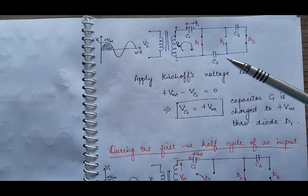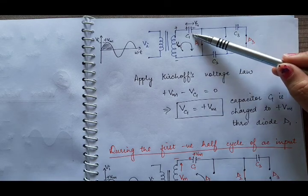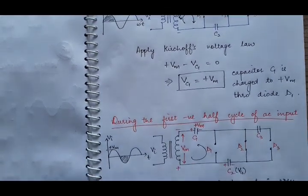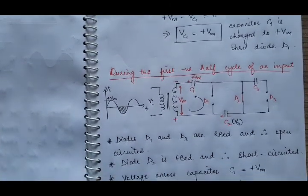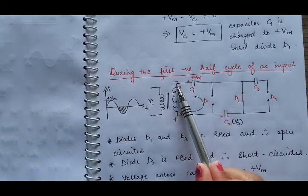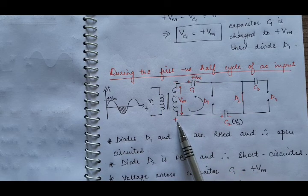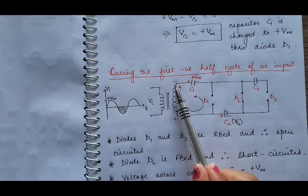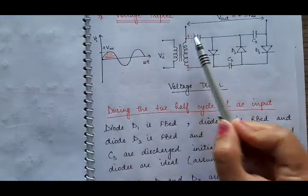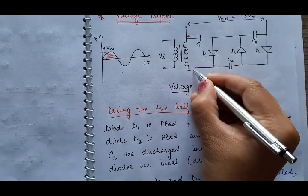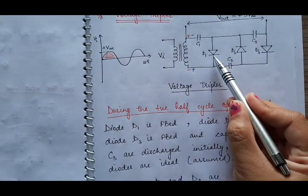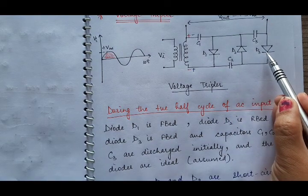After the first positive half cycle, the voltage over C1 is plus Vm. Now during the first negative half cycle of AC input, the upper end of the secondary coil becomes negative and the lower end becomes positive — the polarities are reversed. Because of this, diode D1 will be reverse biased, D2 will be forward biased, and D3 will be reverse biased.